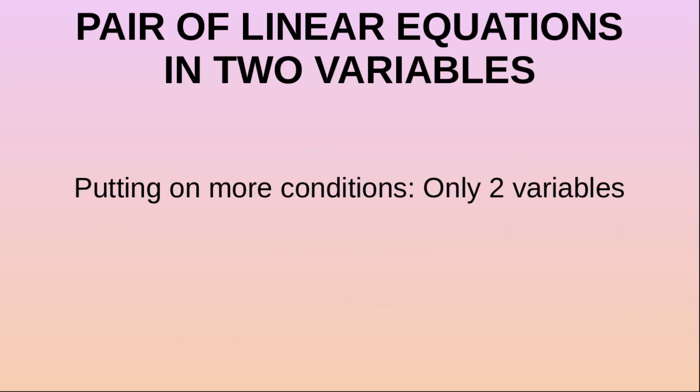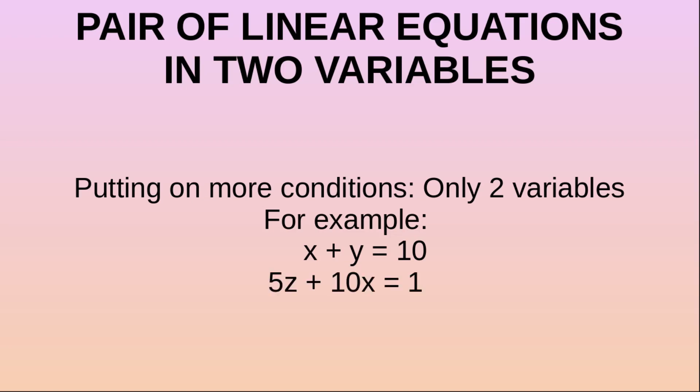Now we are putting more conditions — only two variables. So our equations are linear and can have only two variables. For example, it can be something like x plus y is equal to 10, or we may have 5z plus 10x is equal to 1, where z and x are the variables. Both of these are examples of a linear equation in two variables.